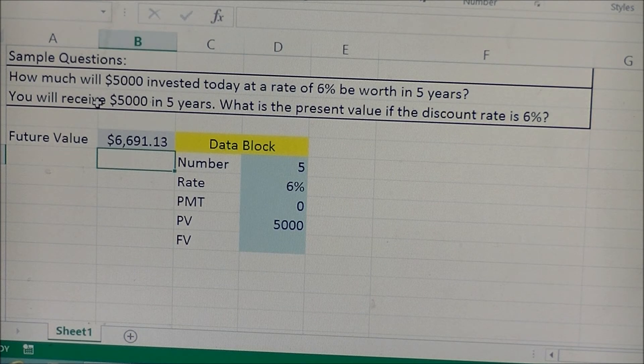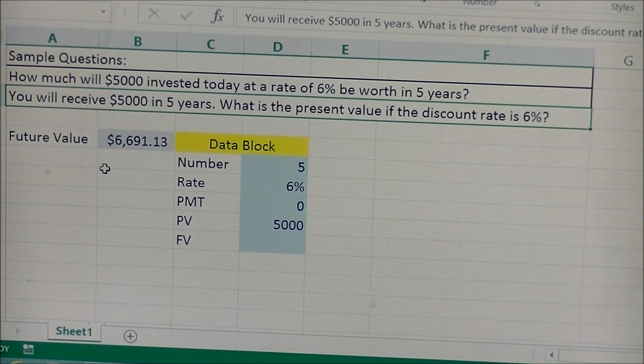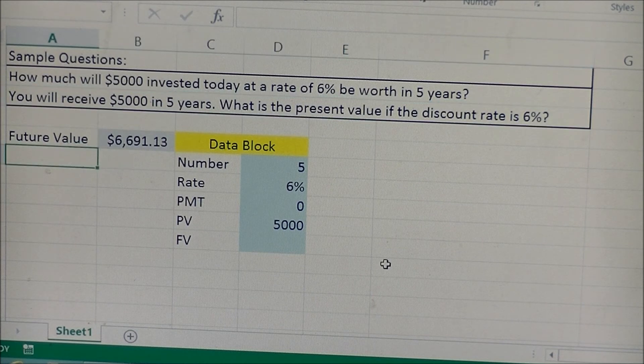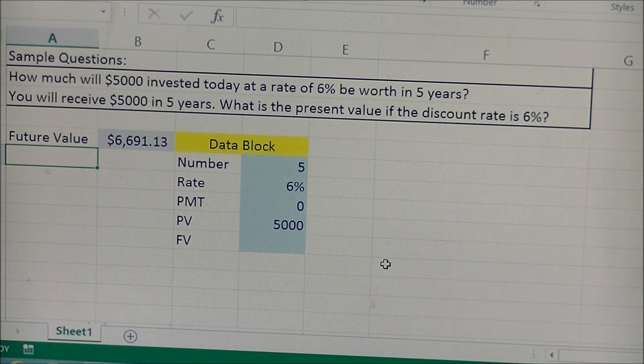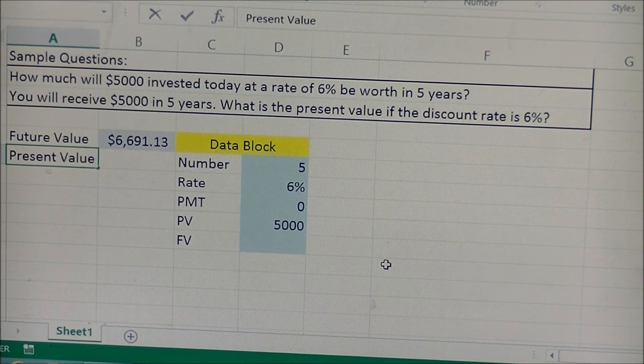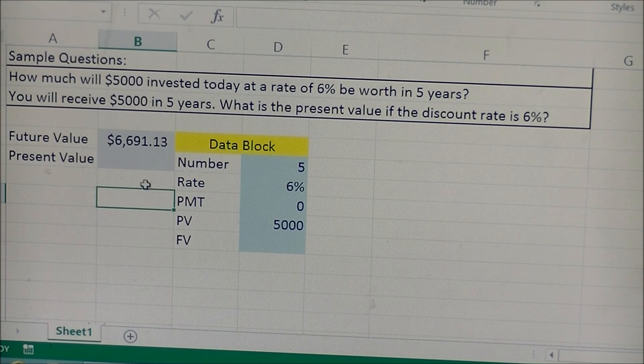And for the next problem, you will receive $5,000 in five years. What is the present value if the discount rate is 6%? To set up the present value template, the first thing I would do is go ahead and type in present value, and again, I'll color code it with gray, which means don't change.